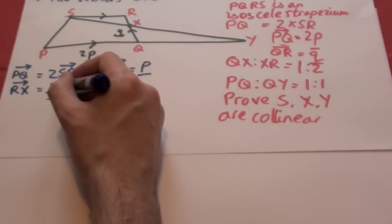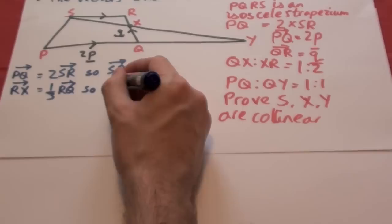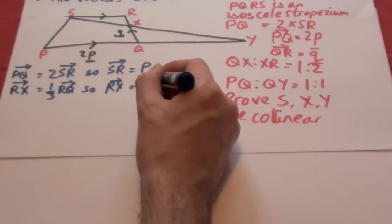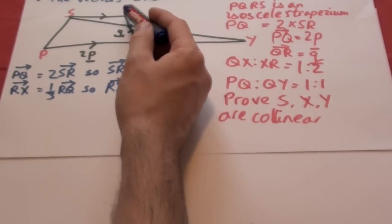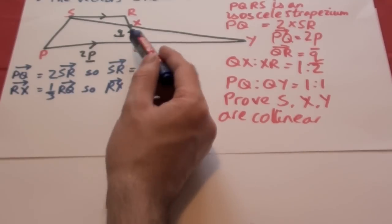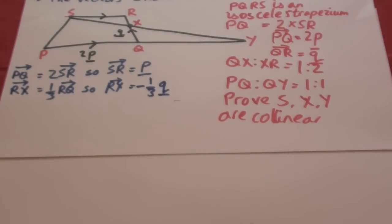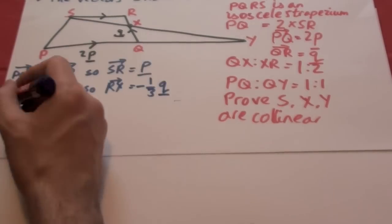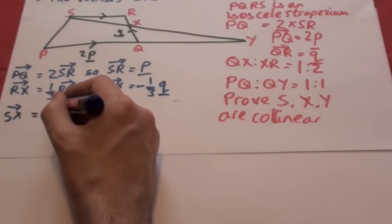R to X is one third of R to Q which is minus Q. Note the way the arrows pointing me are going in the opposite direction. So it's minus one third of Q. Now, so that's S to R and R to X.